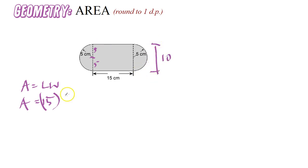So the area of the rectangle is 15 times 10, which is 150 centimeters squared. Now we just need to find the area of the circle.